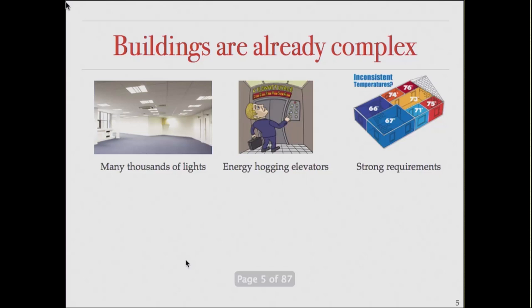One point we may not quite realize is that buildings are actually very, very complex. They have things like many thousands of lights, and people complain if even one light goes out. Elevators, for example, are very large energy hogs and they're very dynamic. Buildings also have very strong requirements — you get complaints if the temperature goes up or down by even a single degree.